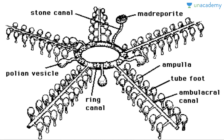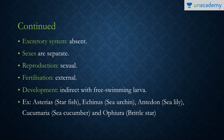In the water vascular system, there is a ring canal in the center, a stone canal, and a madreporite present on the ventral surface. There are ampullae and tube feet, which are essential for locomotion. The tube feet have a swollen part called the ampulla, and there are also ambulacral canals, which are the radial canals. This is the diagram of the water vascular system.